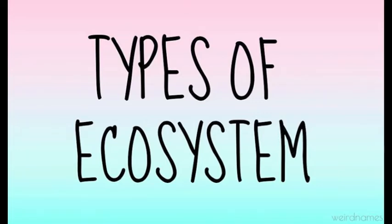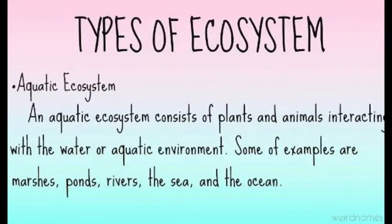An aquatic ecosystem consists of plants and animals interacting with the water or aquatic environment. Some examples are marshes, ponds, rivers, the sea, and the ocean.